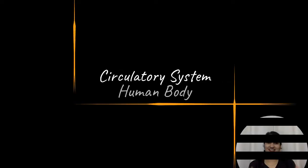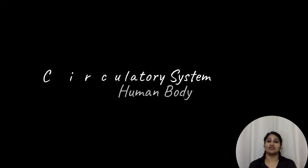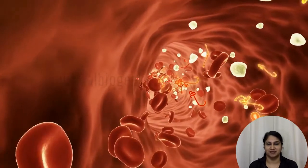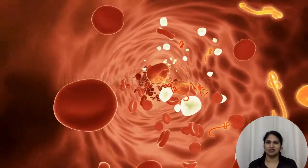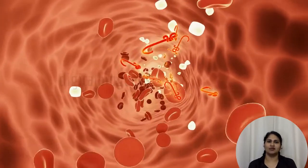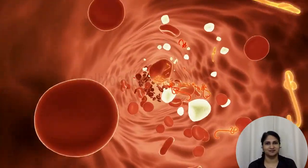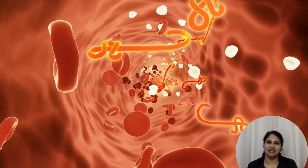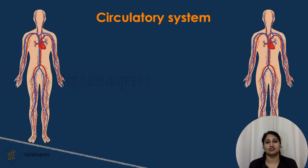The basic structural unit of life is the cell. Cells need oxygen and nutrients for living. The food we eat reaches the stomach and small intestine, and the oxygen we breathe reaches the lungs. There is a transport system in all living organisms that supplies nutrients and oxygen to the whole body. This transport system is the circulatory system.